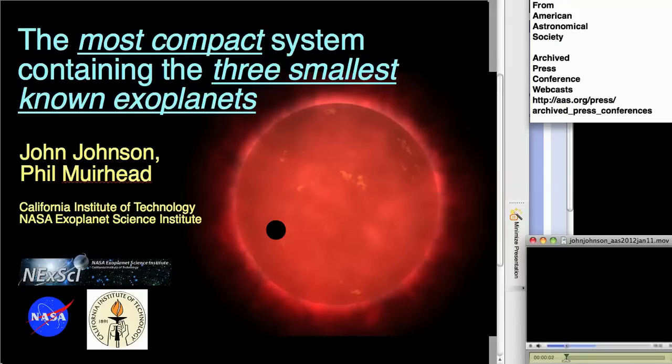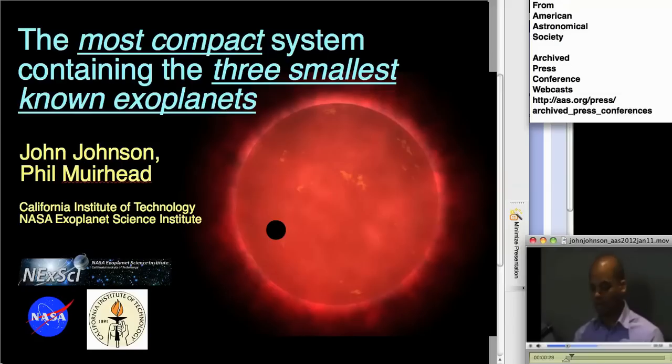All right, so today, here's the more flashy title instead of the bland title that was presented in the press lineup. We have the most compact system of planets, and these planets are all record setters for the smallest planets that have ever been discovered so far to date. As I go through this press presentation, the key words to keep in mind are compact and small. This is small in every single respect compared to our own solar system and compared to other known systems.